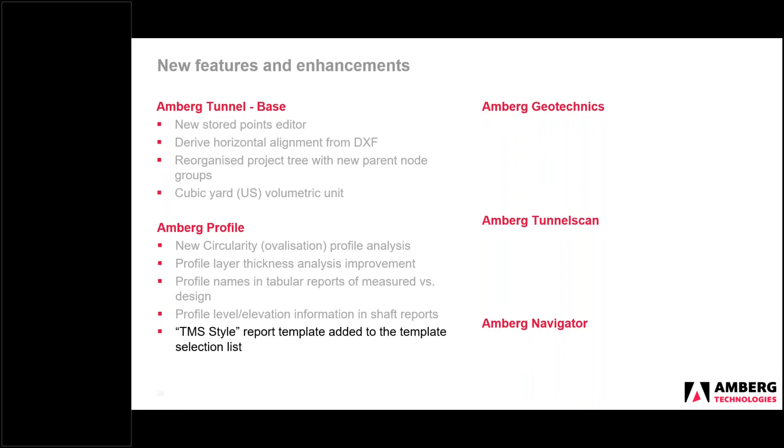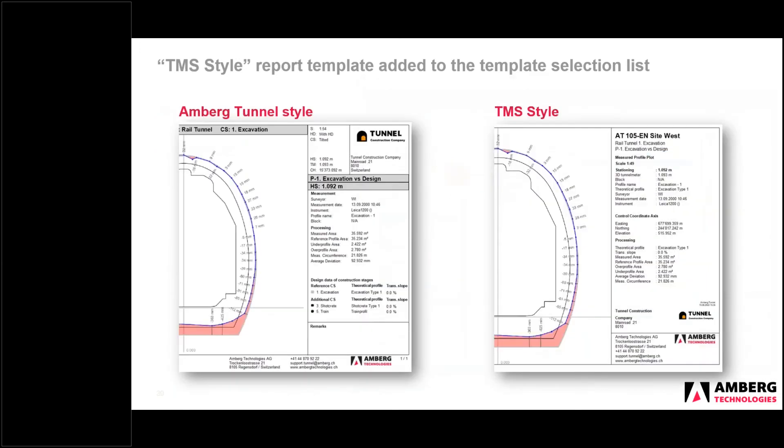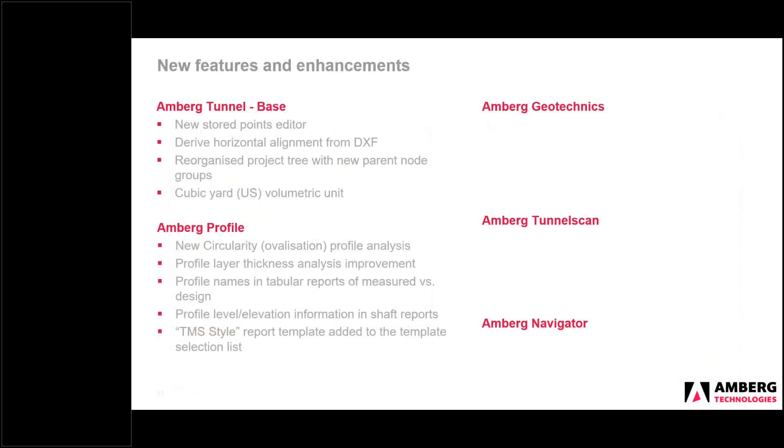So lastly, again, in the theme of reports, we have included in the installation now of Amberg Tunnel the TMS style measured versus design report. This was the predecessor of Amberg Tunnel 2.0, but we had many requests where users still want to use this profile, this template type. And previously you needed to manually load it, but now it comes as standard with Amberg Tunnel. And you can select it in the settings of the analysis under the templates tab. Here's just a quick side-by-side view of parts of the report. The Amberg Tunnel style is the one on the left, the common style. And then the older, the predecessor, the TMS style is a different layout, but it also has some different values. For example, it also includes the axis coordinates as well. So that is Amberg profile.